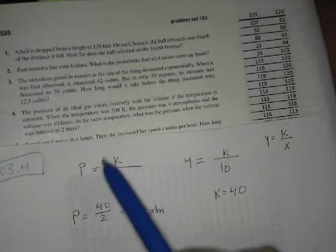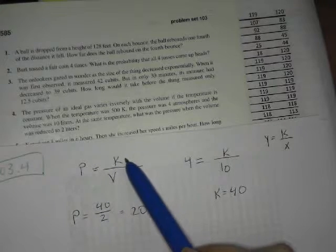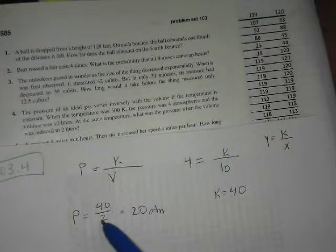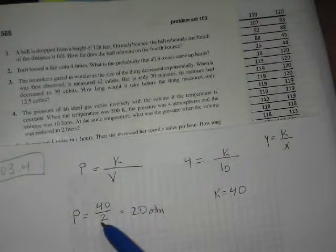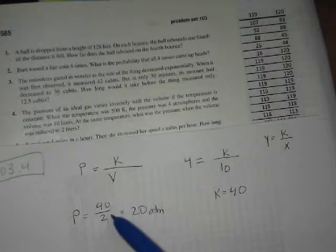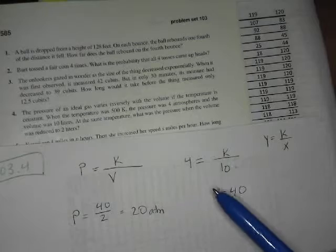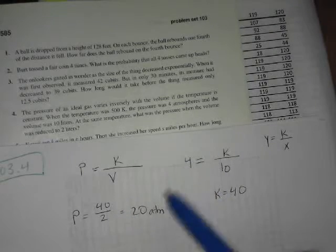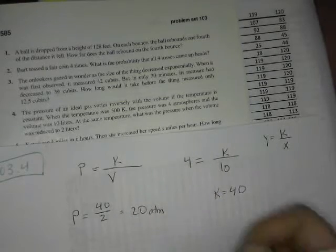Then I grabbed my original formula, but I put in 40 for k. Then it asked me what would be the pressure when the volume was 2, so I plugged 2 in for volume. That's going to give me the pressure: 40 over 2, that's 20 atmospheres.